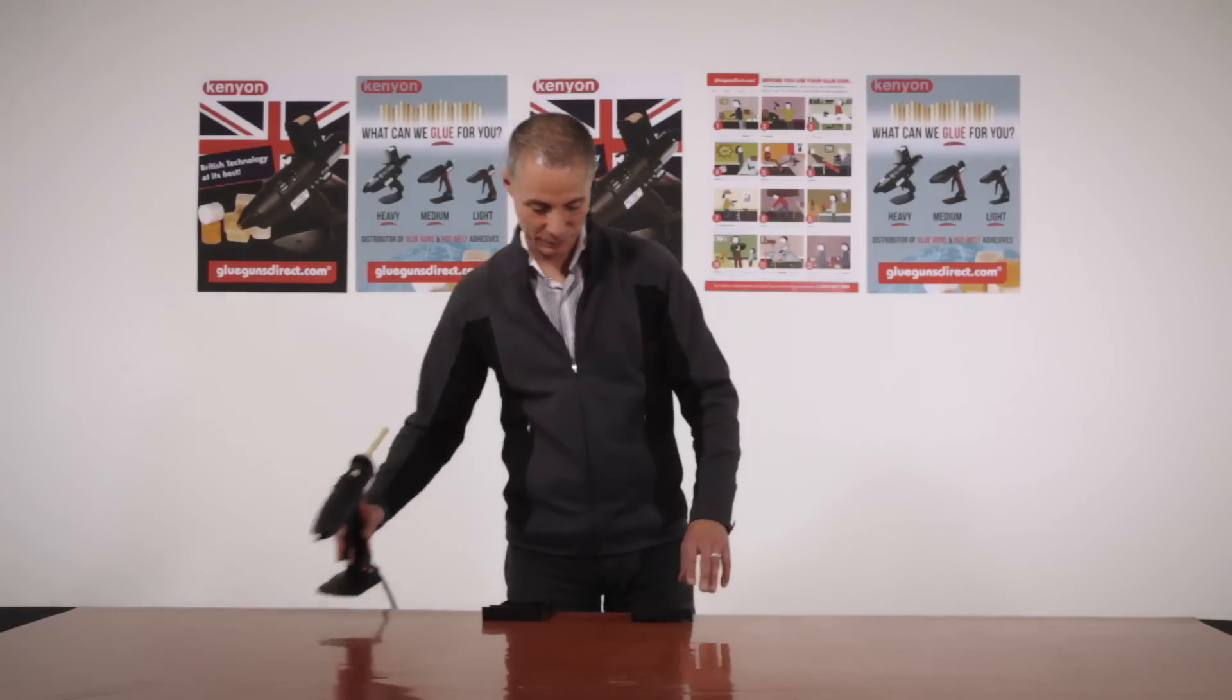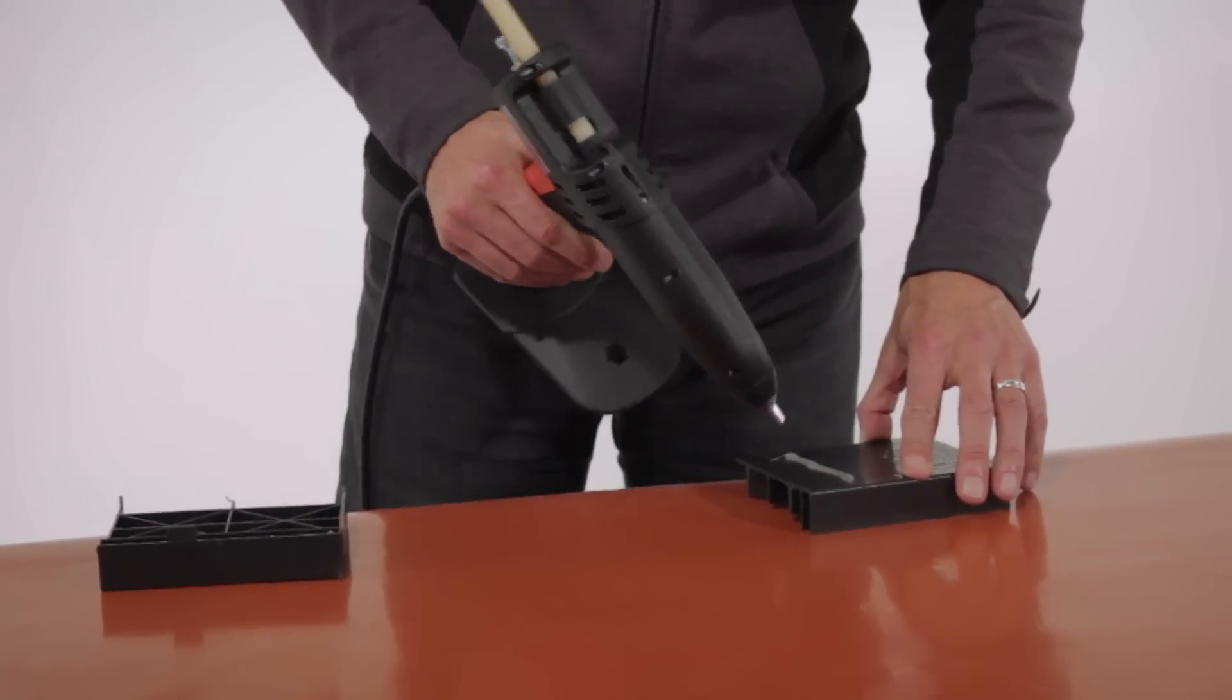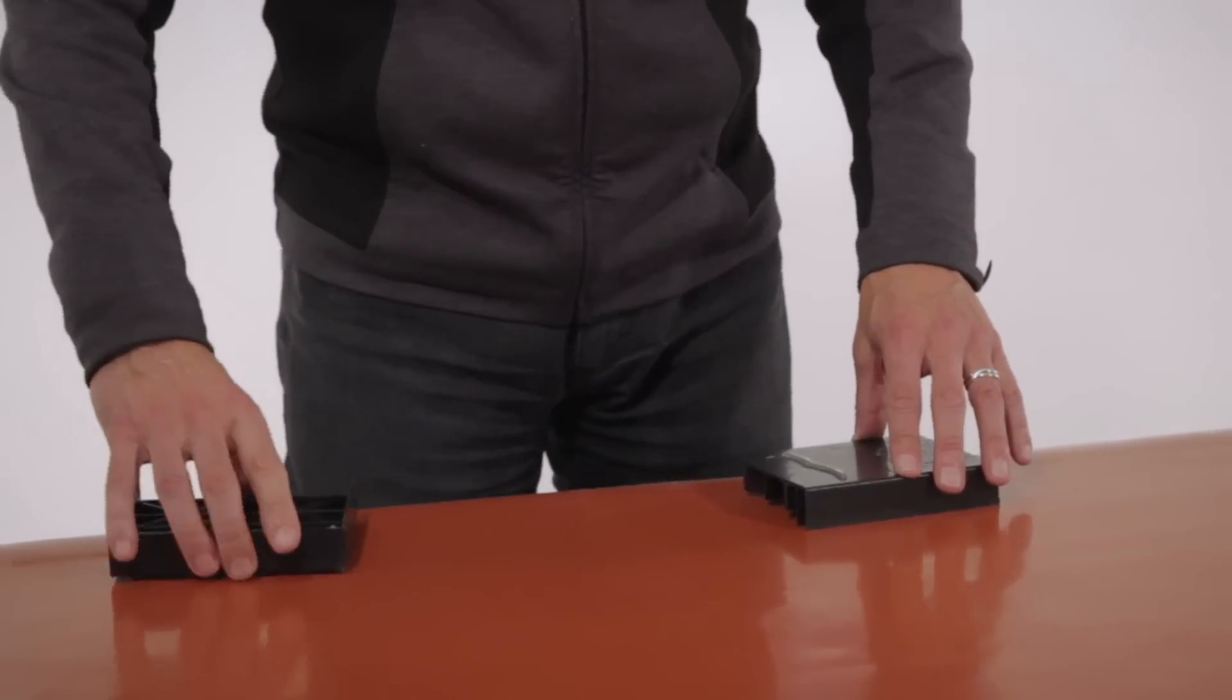Let's get gluing. Here we have two pieces of polypropylene and we're going to create an overlap bond using Tekbond 263.